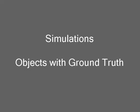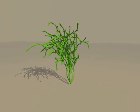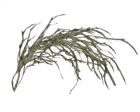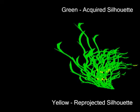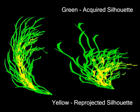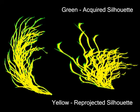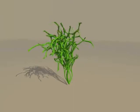In order to evaluate our techniques, we have performed several simulations using objects with known ground truth geometry. In all cases, we have added a small random error to the light source positions. First, we show a seaweed-like object with many thin and self-occluding branches. Notice the significant improvement in the reconstructed 3D model. Here we trace the improving light source positions. The match between the acquired and re-projected silhouettes increases until it becomes almost perfect.